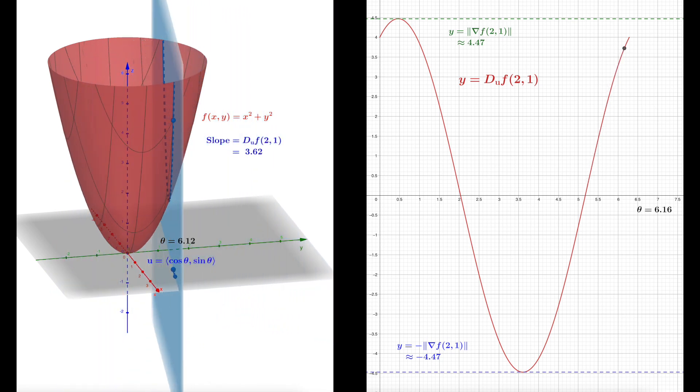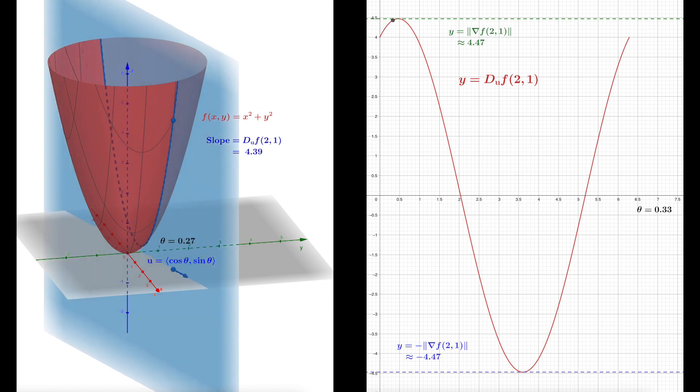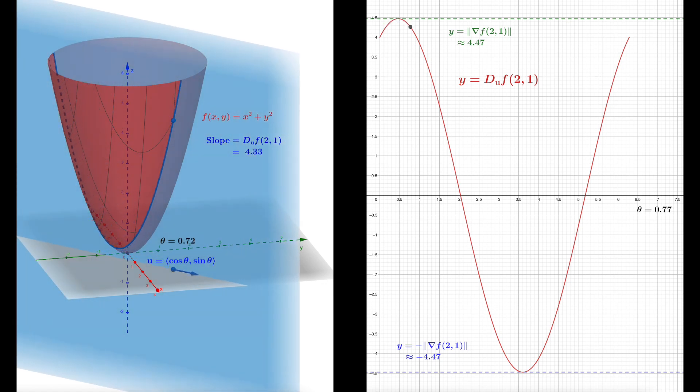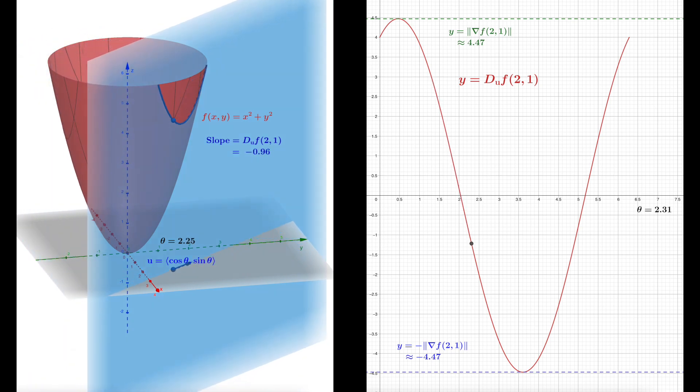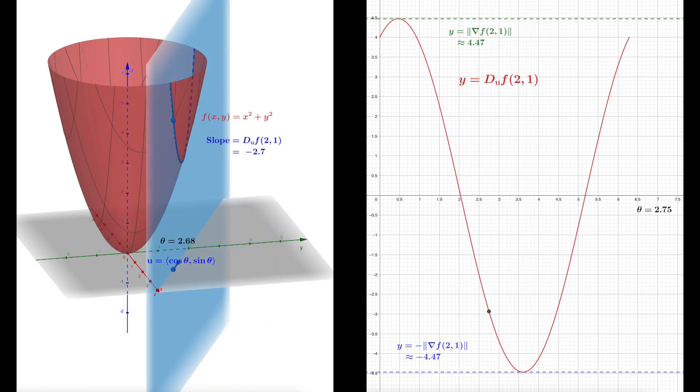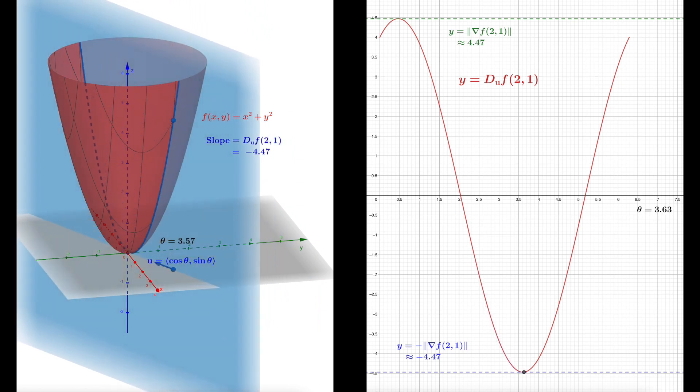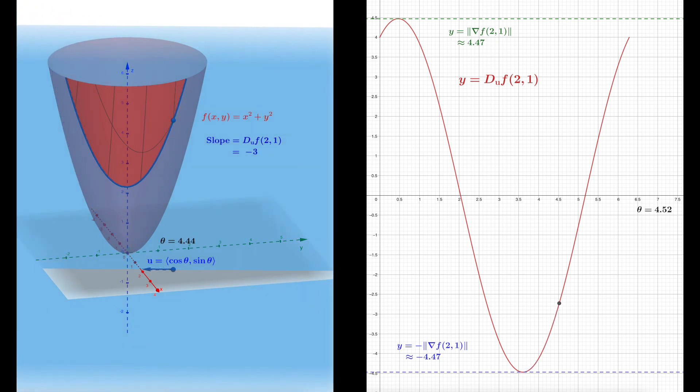From calc 3 we know that the theory says the maximum value of a directional derivative is attained whenever you point in the direction of the gradient. We're going to talk about the gradient in a minute. The actual maximum value itself—the actual maximum rate of increase—is the magnitude of the gradient. Vice versa, the minimum rate of increase is going to be the negative value of the magnitude of the gradient. So that's the blue dotted line below.